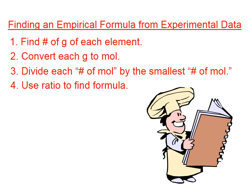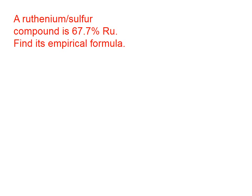We'll demonstrate that with two examples. A ruthenium sulfur compound is 67.7% ruthenium. Find its empirical formula. The first step is find the grams of each element. We're not told how many grams of each element.